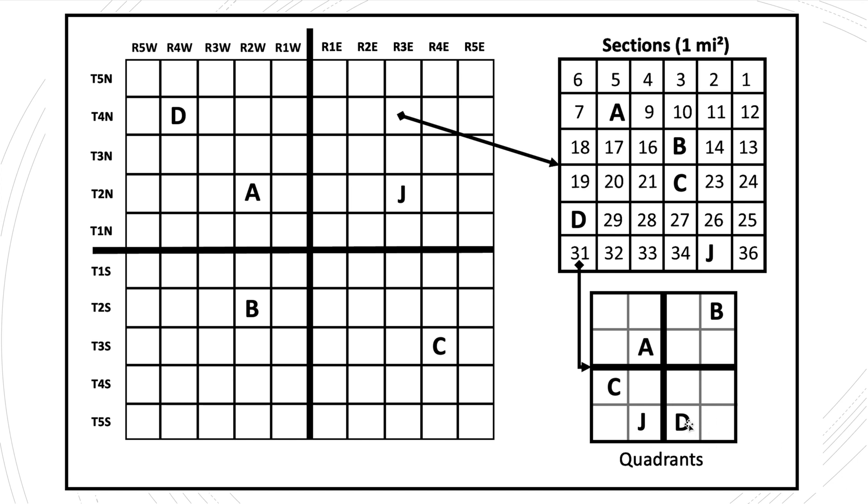Let's try one more, let's do letter D. Well, remember we start from the quadrants, move to the sections, and then the township and range. D is in the southwest corner of this quadrant, the southwest of the southeast quadrant of the section number 30, and it's part of Township 4 North and Range 4 West.